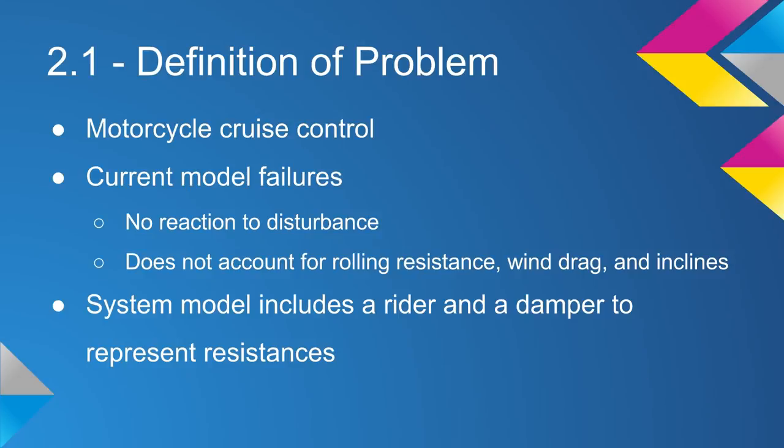It doesn't account for any disturbances and doesn't account for any sort of resistance to the motion of the motorcycle. In our model, it should adjust the throttle according to the conditions of the roadway and of the rider.